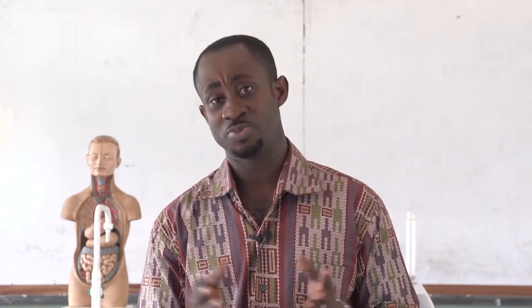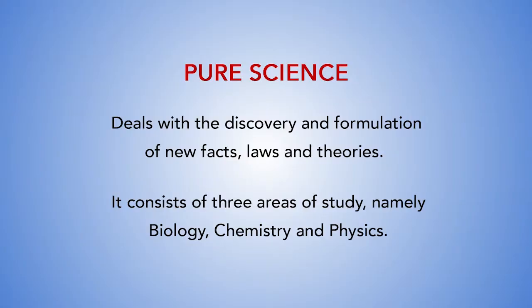Which of these areas can be considered as pure science or applied science? Before that, let us explain these sciences — that is, pure science and applied science. Pure science has to deal with the discovery and formulation of new facts, laws and theories. It consists of three areas of study, namely biology, chemistry and physics.